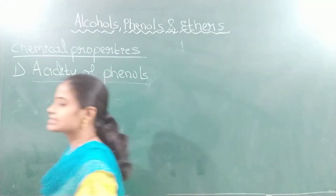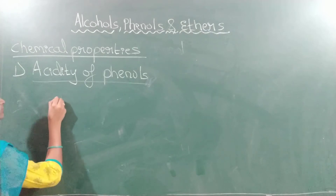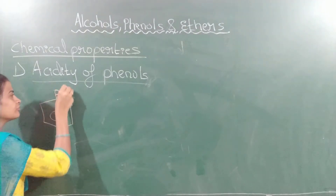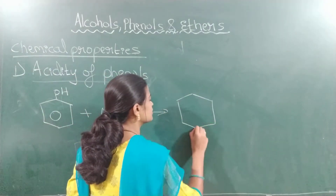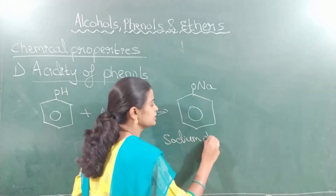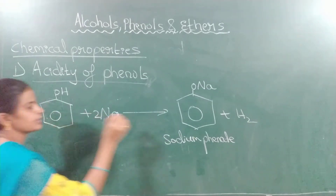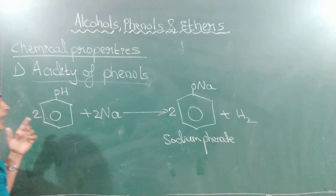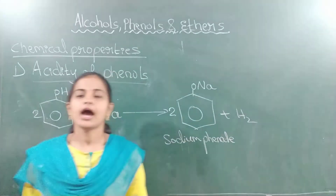How can we say that phenols are acidic in nature? Phenols react with highly electropositive metals like sodium to form sodium phenate, releasing hydrogen gas. Phenols react with sodium and form sodium phenate by releasing hydrogen gas.